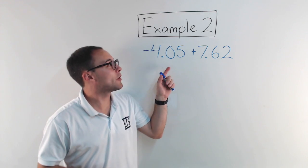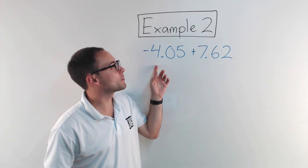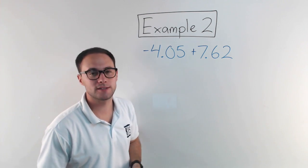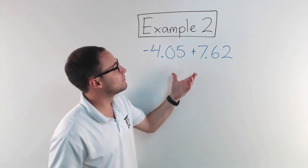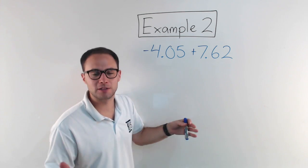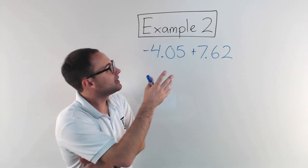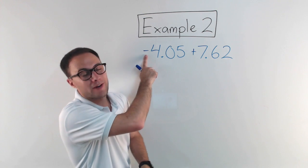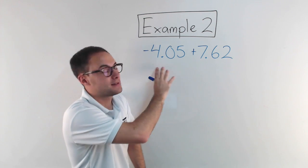All right, so now we're adding decimals. Negative four-point-zero-five plus seven-point-six-two. As you know, when you're adding or subtracting decimals, first thing, the most important, is that you're always going to line up the decimals. Here though, notice we've got a negative, so we haven't done this yet.